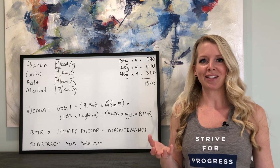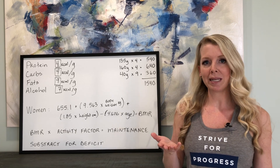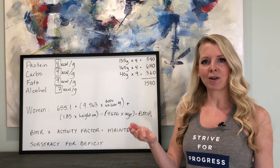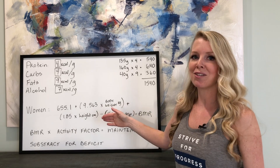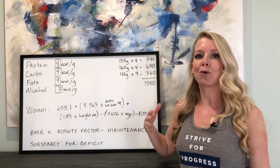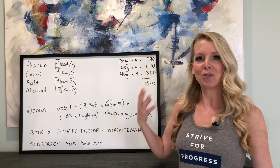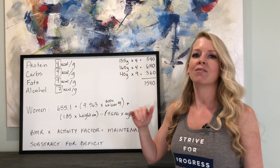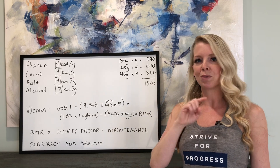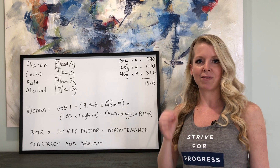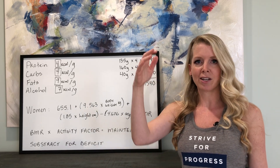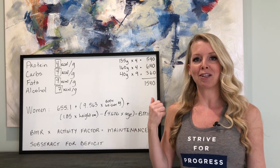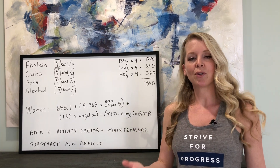The first thing we need to do is calculate your maintenance calories. To do that, we first need to calculate your BMR. You can easily convert your weight and height into kilograms or centimeters using Google, then plug it into the equation for women or men listed below to get your BMR. Then multiply your BMR by your activity factor — ranging from 1.2 if you're sedentary to 1.9 if you're extremely active — and that gives you your maintenance calories.